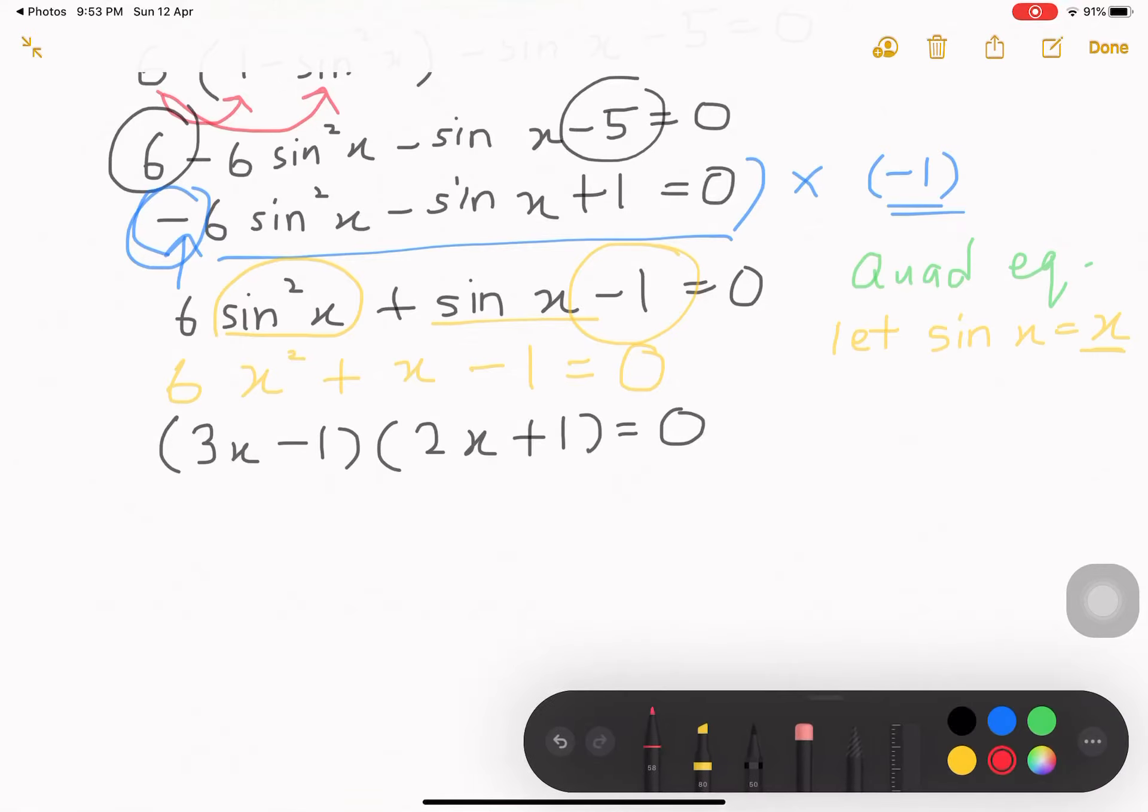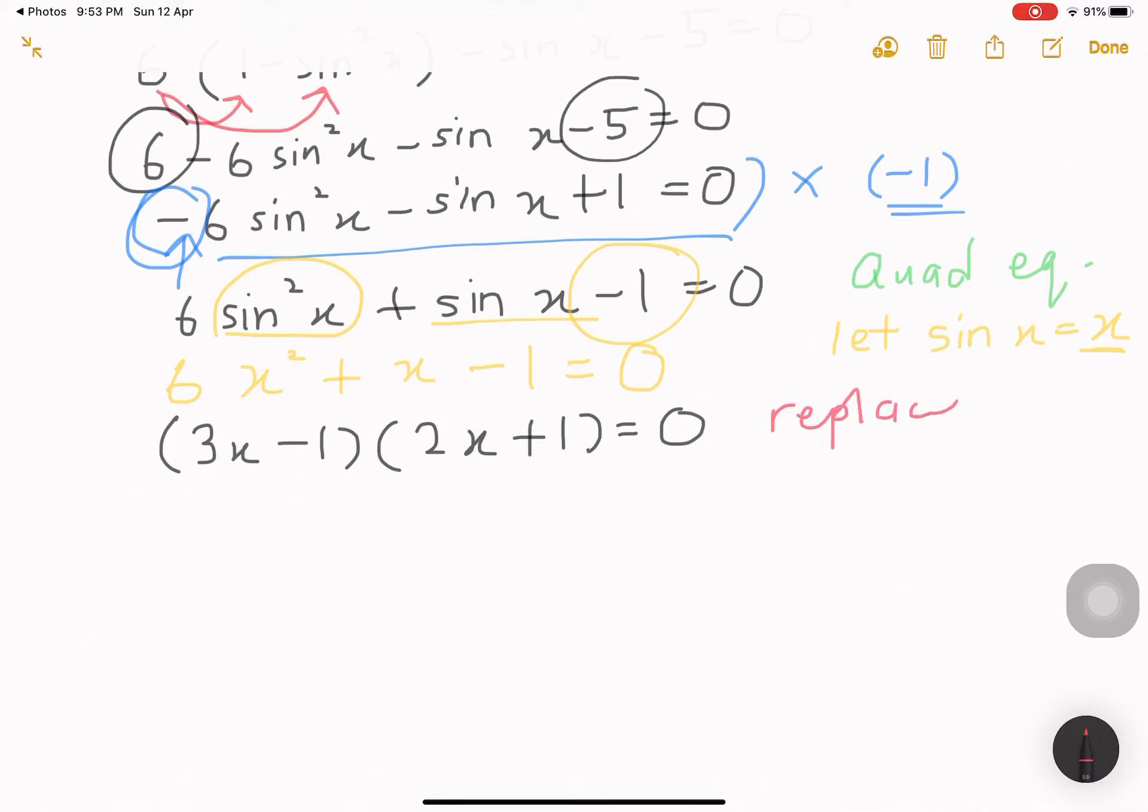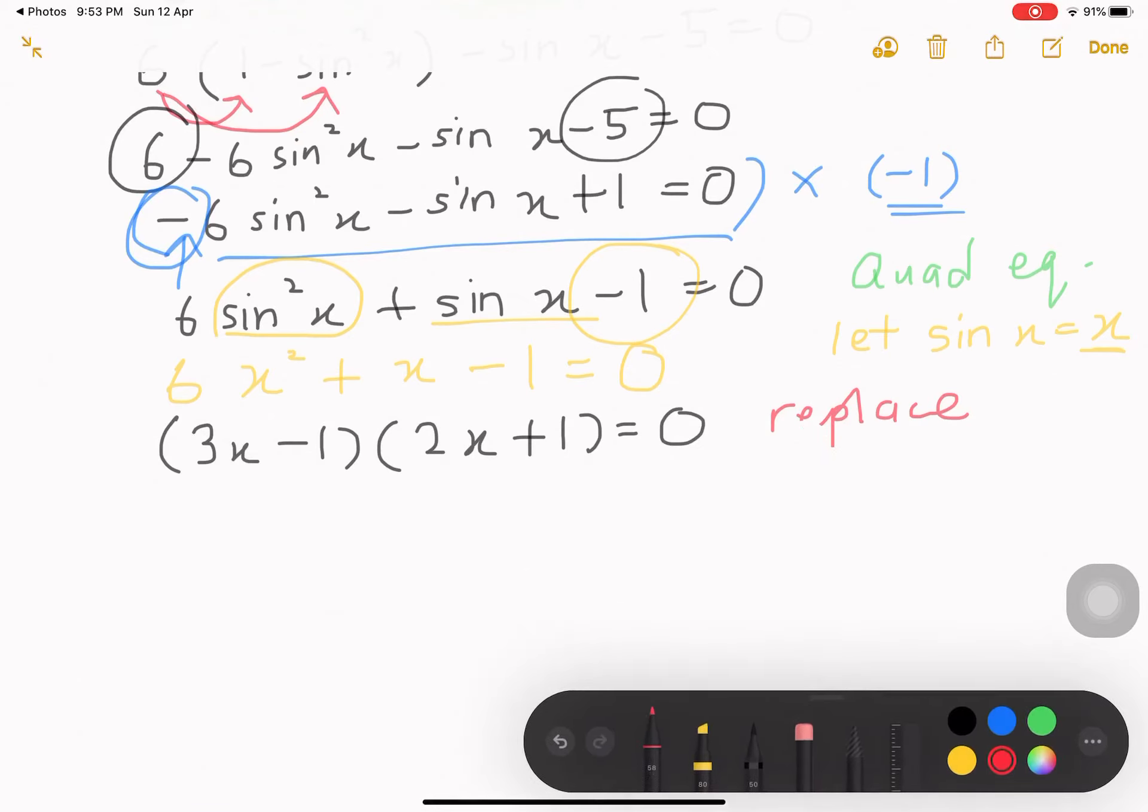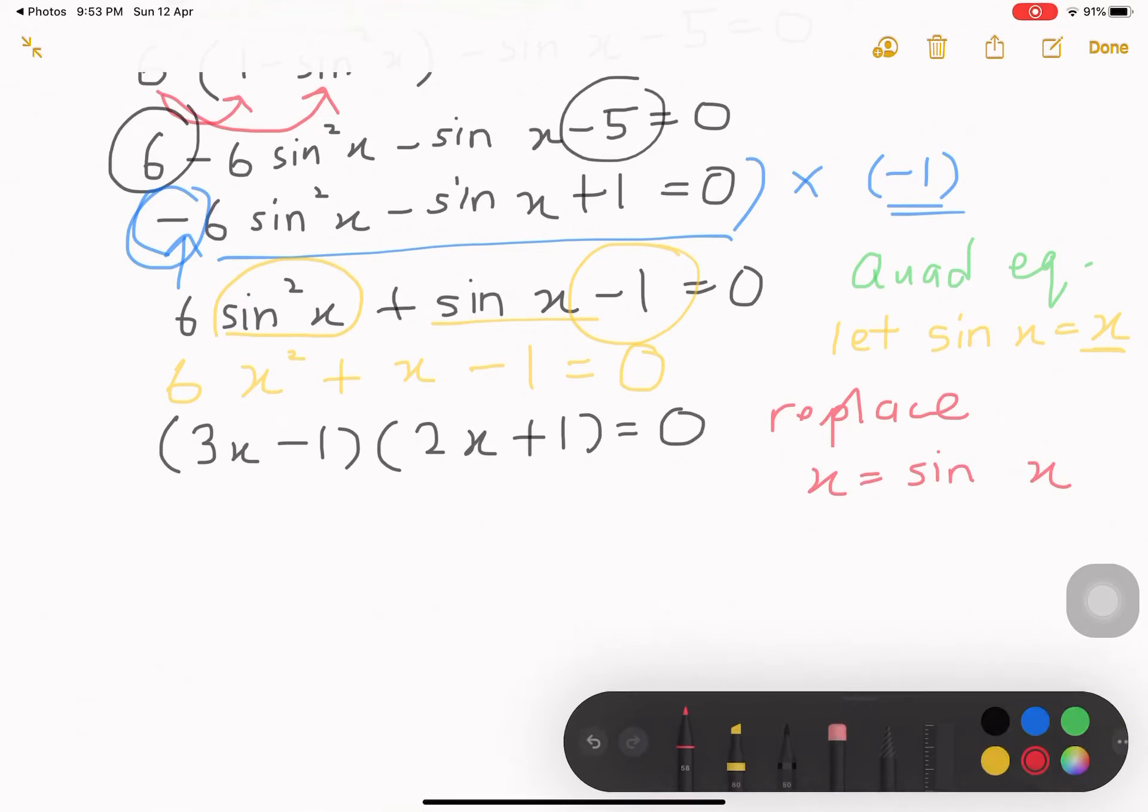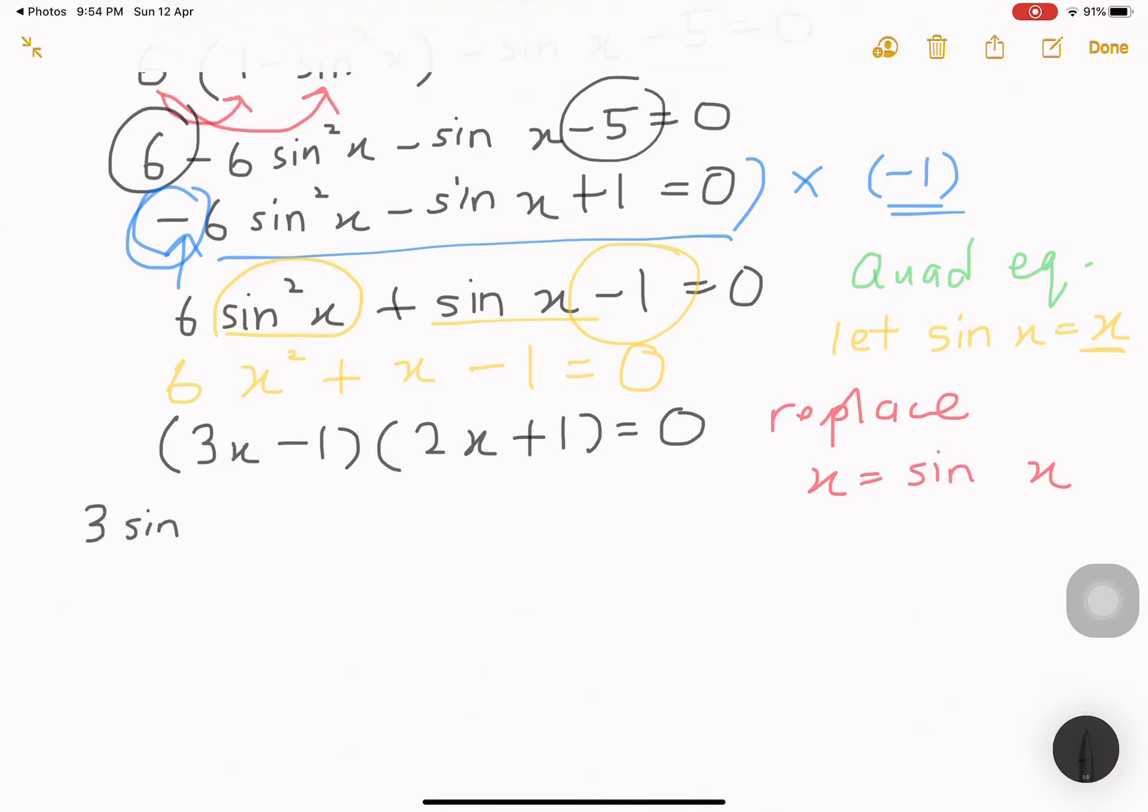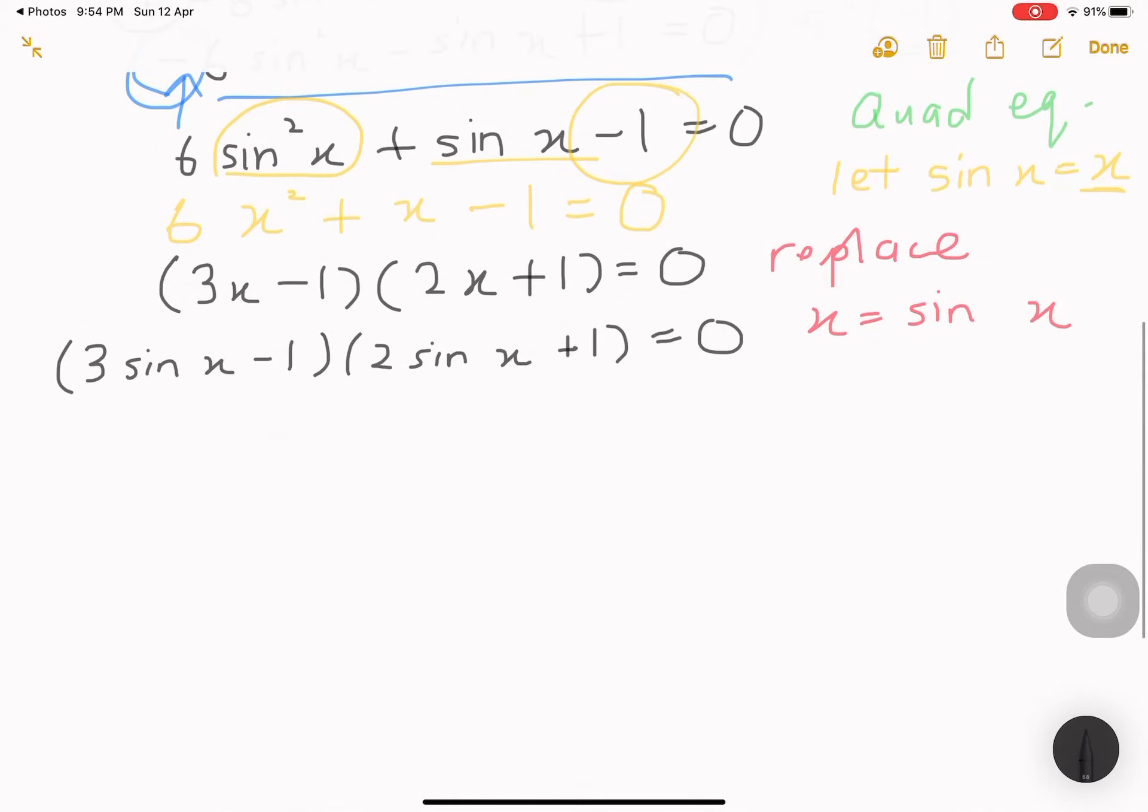Replace. Sin x. I have to replace x as sin x again. What I get is that, I'll get 3 sin x minus 1, and 2 sin x plus 1 equals to 0. Now, at this part, you have two values, and you have two ways to solve it.